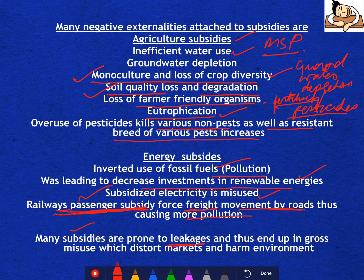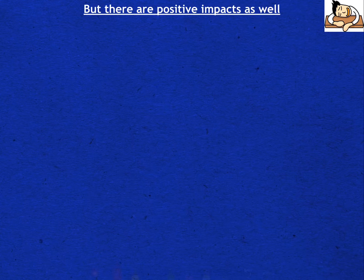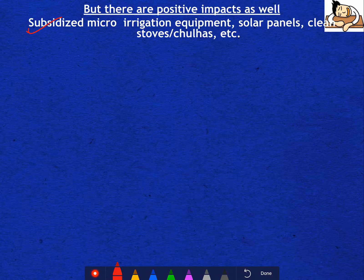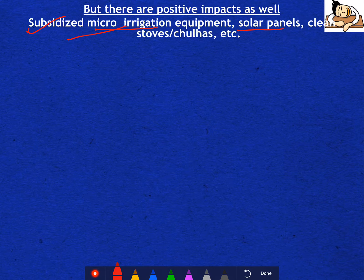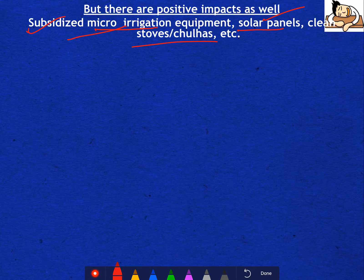Many subsidies are prone to leakages and end up in gross misuse, which distorts markets and harms the environment. On the positive side, subsidized micro-irrigation equipment and solar panels are beneficial — micro-irrigation actually allows use of less water. Solar panels promote renewable energy. Clean stoves and chulas are also subsidized, which promotes good environmental effects.